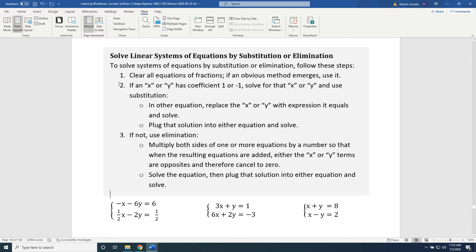To solve systems of equations by substitution or elimination, follow these steps. Step 1: Clear all equations of fractions if an obvious method emerges. Step 2: If an x or y has a coefficient of 1 or negative 1, solve for that x or y and use substitution.